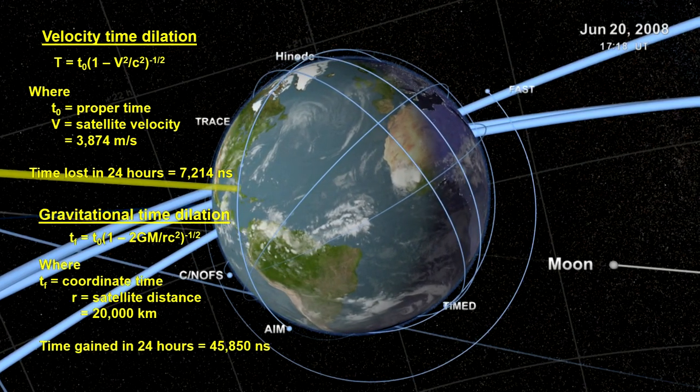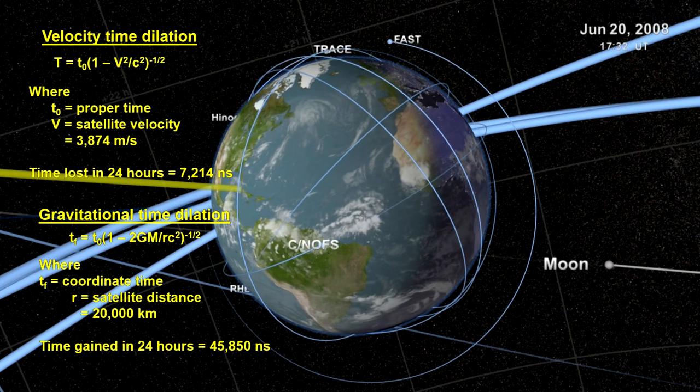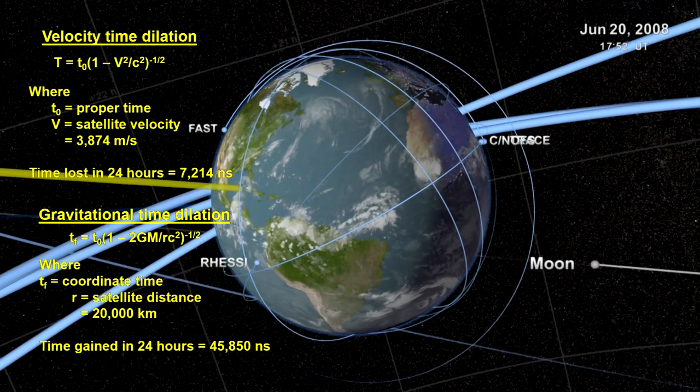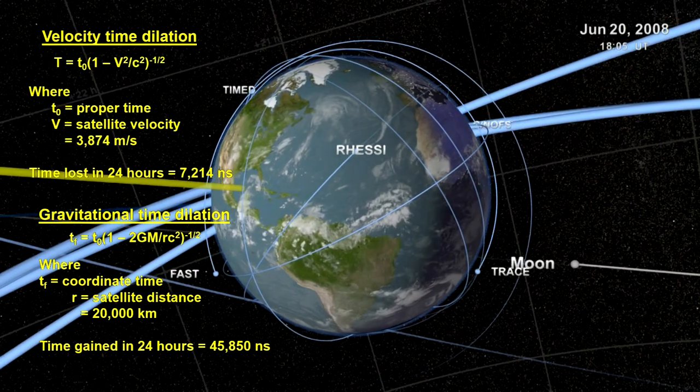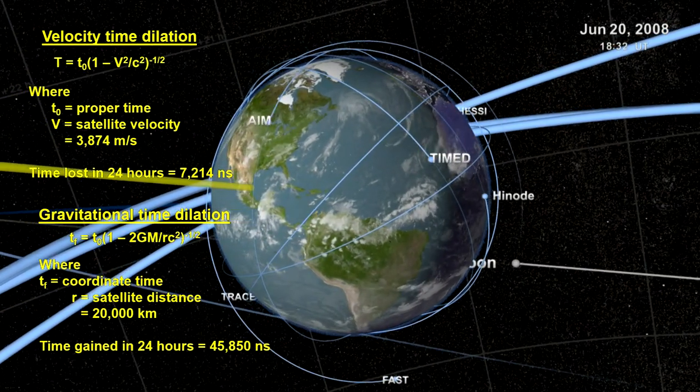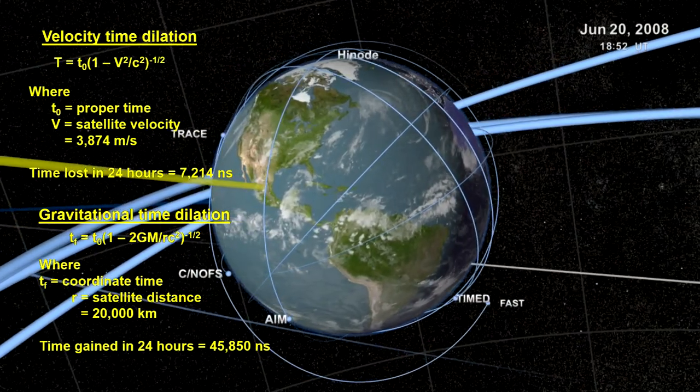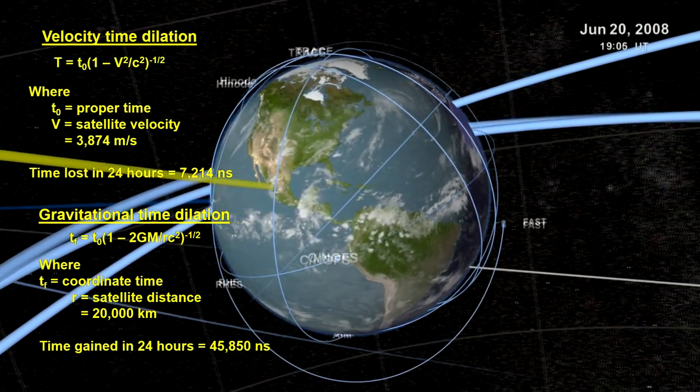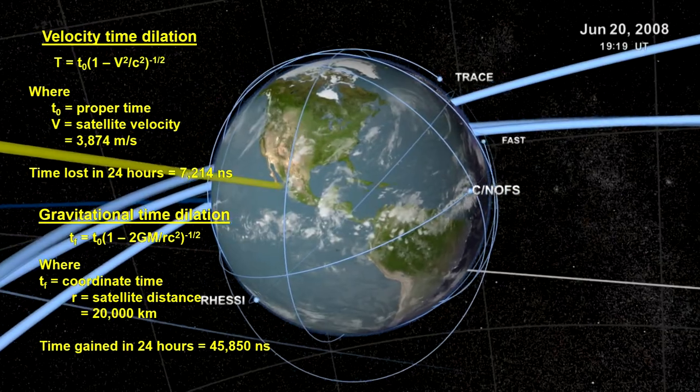They must also take into account gravitational time dilation, due to their being further away from the Earth than clocks on the ground. Based on the Schwarzschild metric, calculations show that the satellite's clocks will gain over 45,000 nanoseconds a day due to this general relativity effect.